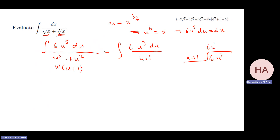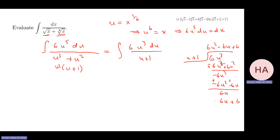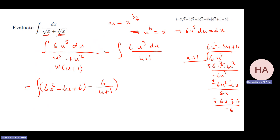Continuing the long division of 6u³/(u+1): 6u² × (u+1) = 6u³ + 6u², leaving -6u². Then -6u × (u+1) = -6u² - 6u, leaving 6u. Then 6 × (u+1) = 6u + 6, leaving -6. So the expression equals 6u² - 6u + 6 - 6/(u+1), all times du.